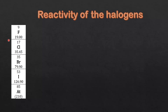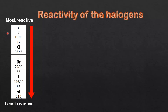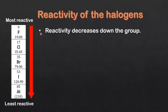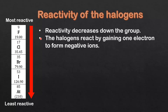Next we'll have a look at the reactivity of the halogens. Reactivity decreases down the group, so fluorine is the most reactive and iodine is the least reactive. Let's have a look at the reason for this.